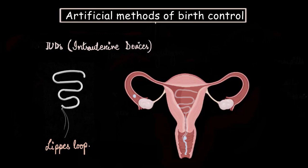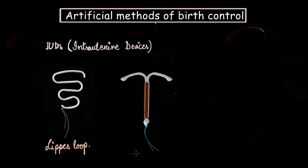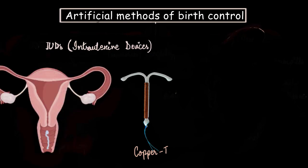Now let's move on to another intrauterine device, which is very popular and we call it the copper T. So as you can guess, it got its name because of the shape it has, that is the shape of a T and also copper coiling around it. And in the uterus, it sits somewhere here, like a T along with its threads flowing down the vagina.